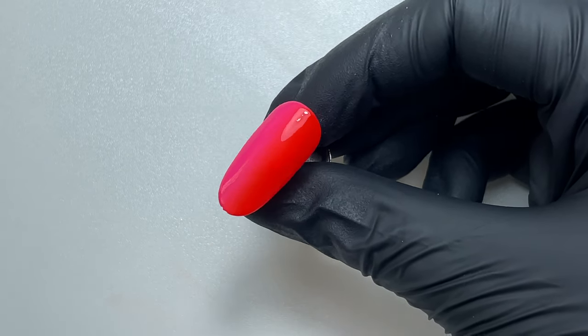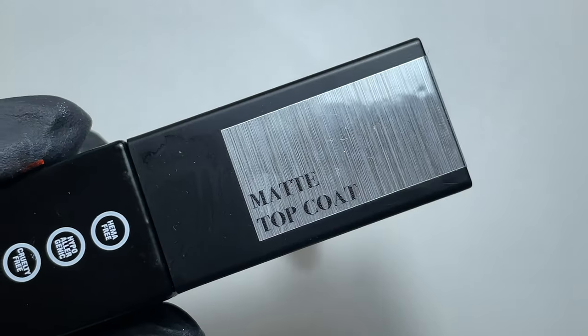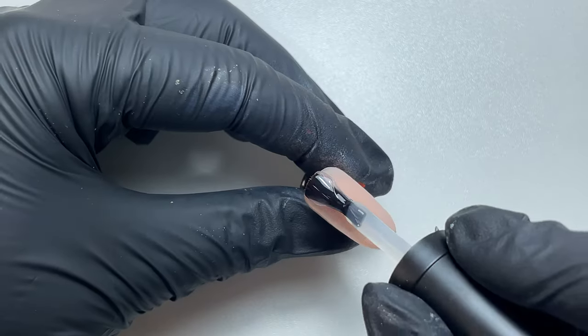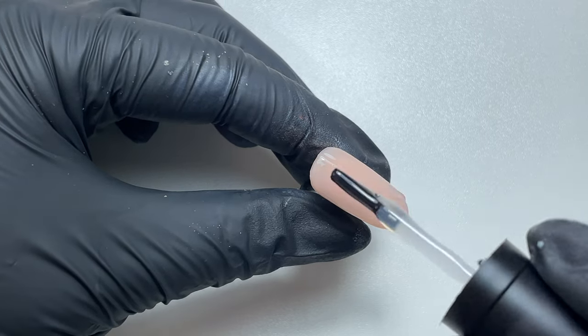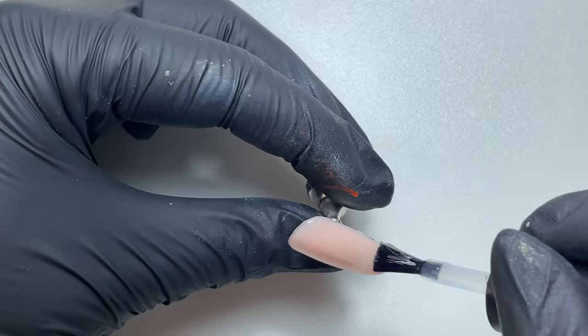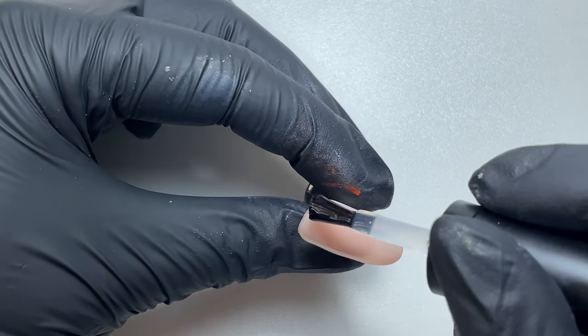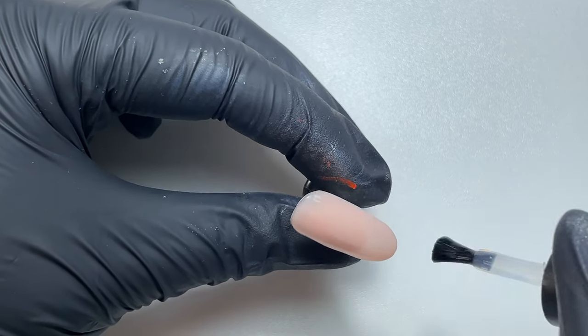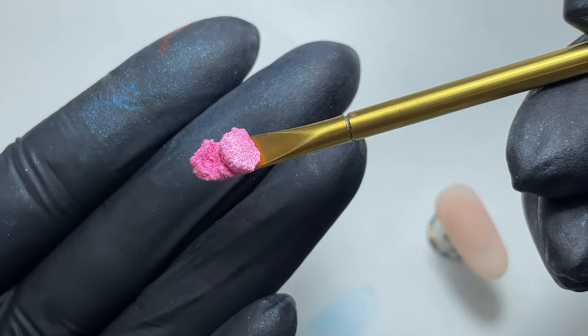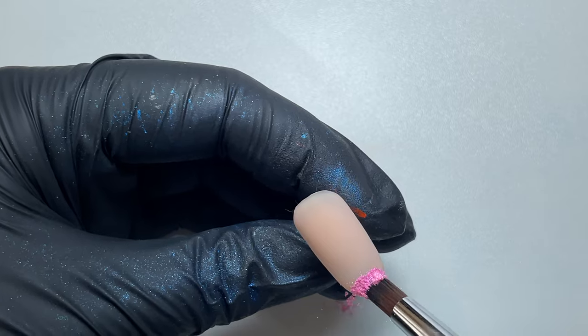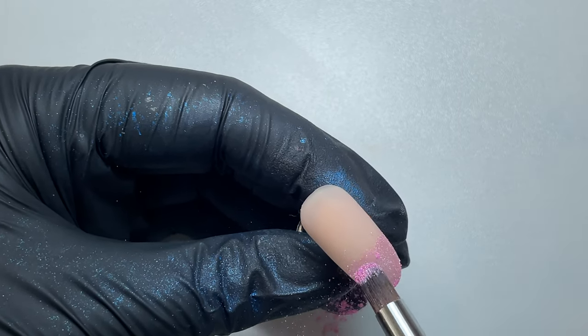Moving on to our third and final ombre, I'm popping matte top coat all over the top of Buff gel polish, covering the nail plate, and I'm going to pop that into the lamp to cure for 60 seconds. Next I'm going to take my mica powder in Barbie Pink and my fluffy brush and start dabbing that into the nail plate.